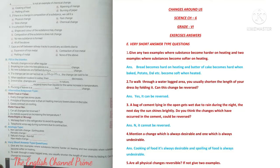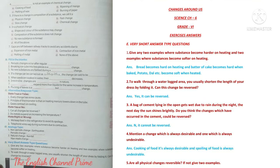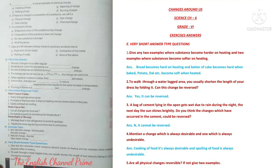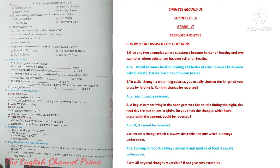Section E — Very short answer type questions. Question one: Give any two examples where substances became harder on heating and two examples where substances became softer on heating. The bread becomes hard on heating. Batter of cake, potato, or any vegetable became soft when baked.